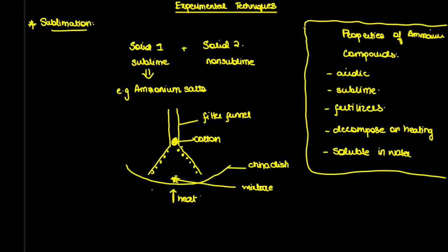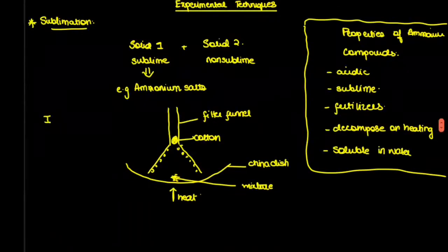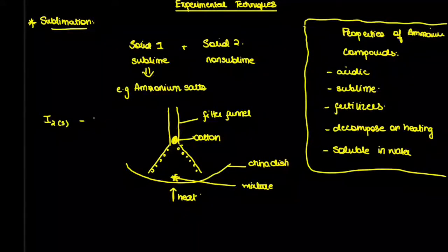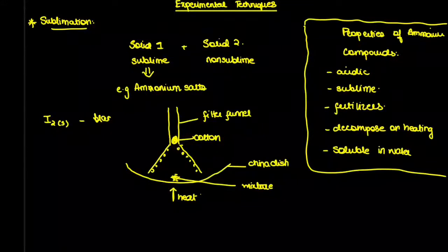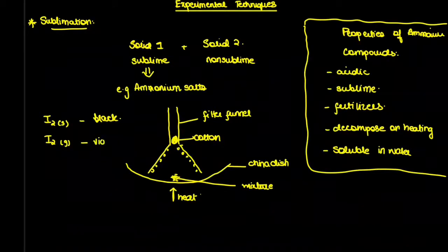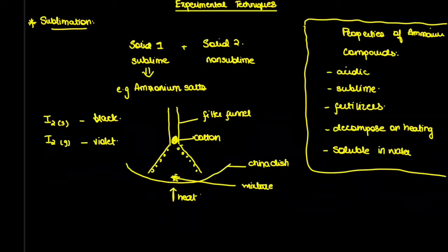Regarding colors, a very famous solid often asked about is iodine. In its solid state, iodine is black. When in its vapor or gaseous state, iodine is violet. That covers sublimation — now we'll move on to centrifugation.